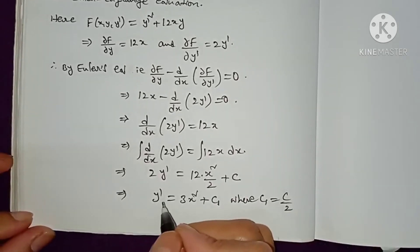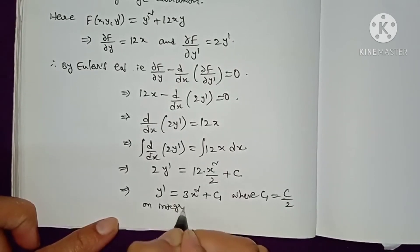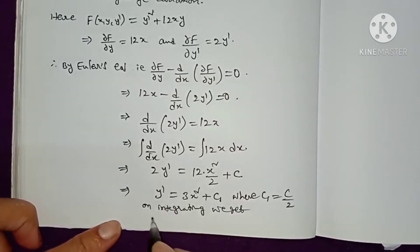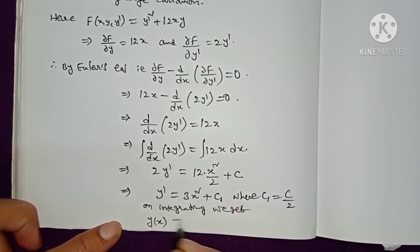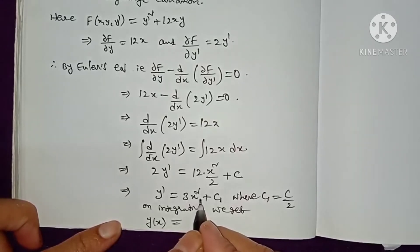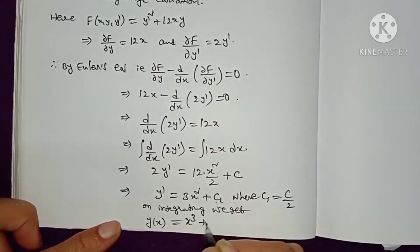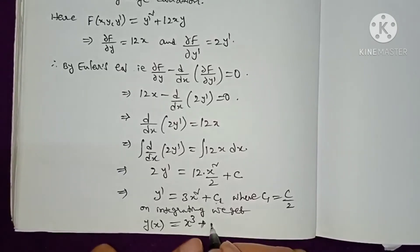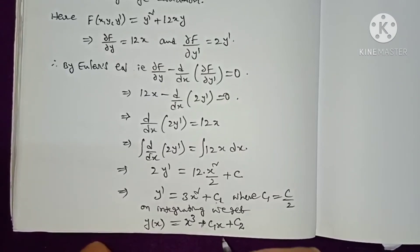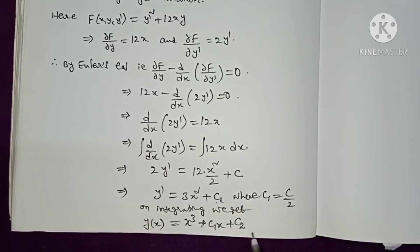Integrating again, y'  integrates to y(x), and 3x² integrates to x³ (since 3 · x³/3 = x³). So we get y(x) = x³ + C₁x + C₂.